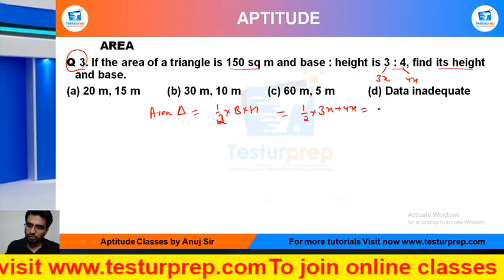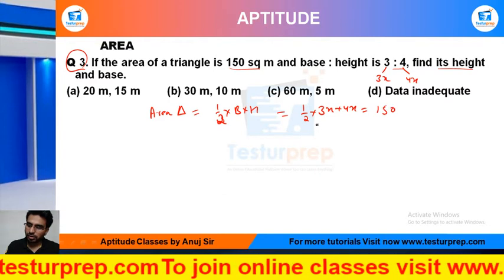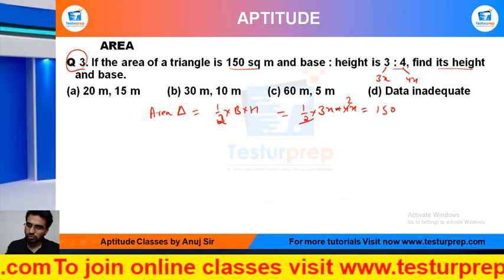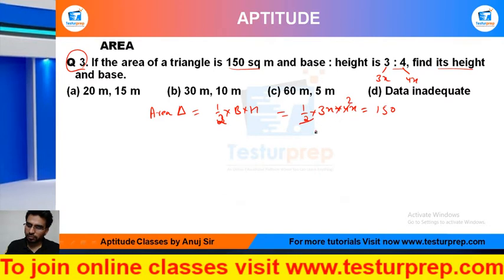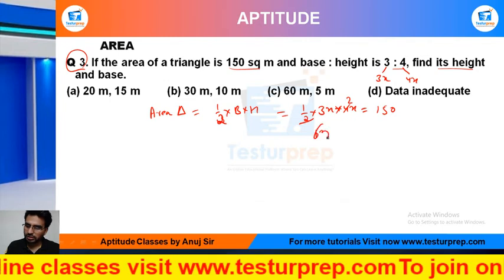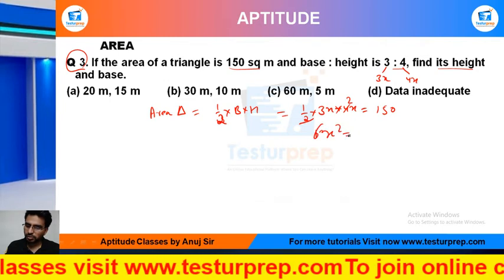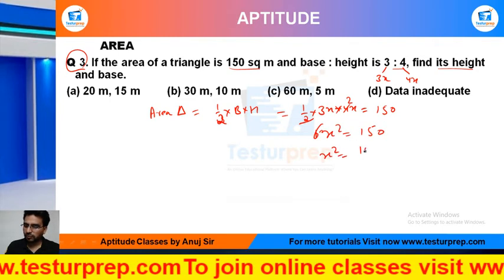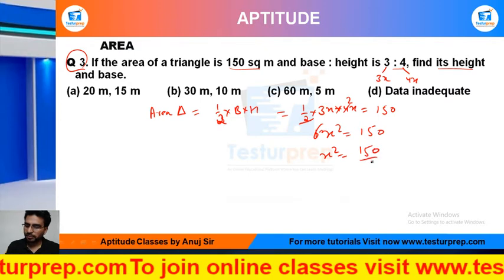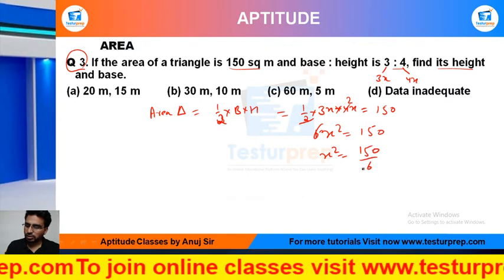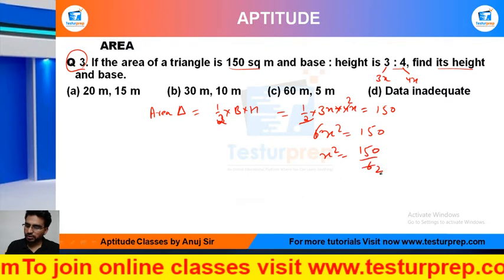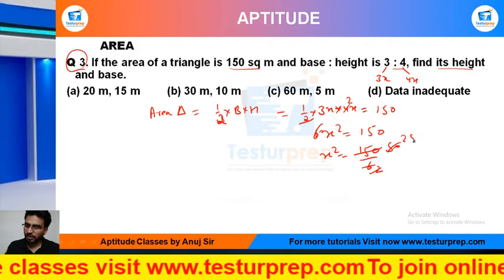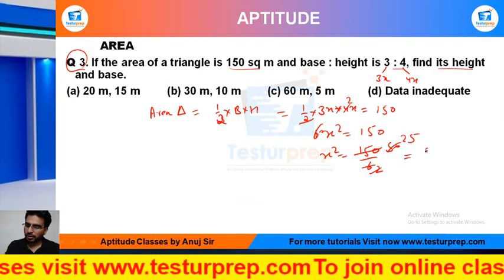That should be equal to 150. The 2 cancels, giving us 6x squared equal to 150. So x squared equals 150 divided by 6. Simplifying: 3 cancels to give 50, then 50 divided by 2 gives 25.